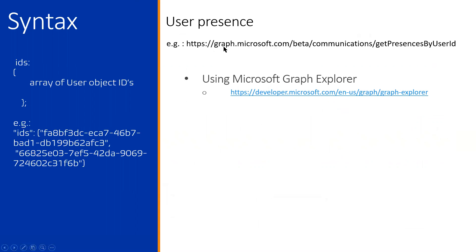Here is the typical Graph API call syntax. Currently this endpoint is in beta, but you can use it with the communications endpoint. You specify the operation — for example, to get presence by user — and you send a set of user IDs in that format to retrieve the presence information for those users.